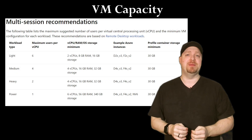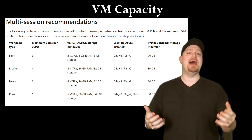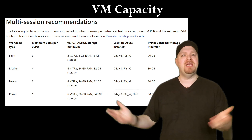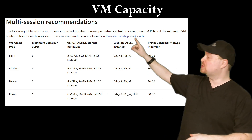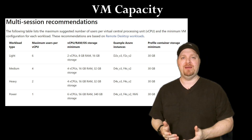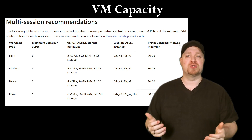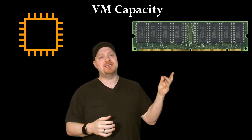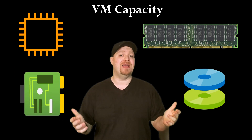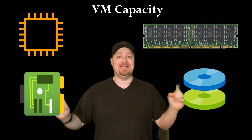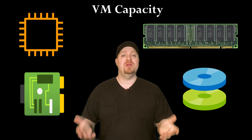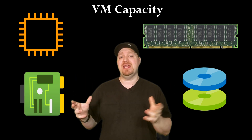This table is also in the Azure documentation, and it's a general guide on sizing recommendations for different types of workloads: light, medium, heavy, and power. Notice the VM SKU these are based on — the D4S V3. That's a general purpose virtual machine with four CPU cores, 16 gigs of RAM, dual gigabit network cards, and up to 8,000 IOPS of disk performance on eight disks. This is the key to VM capacity planning.